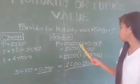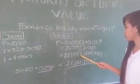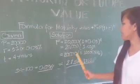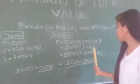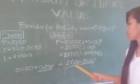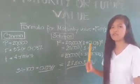Then we're going to multiply by itself. And then the answer is 1.12550881. Then we multiply 20,000 to 1.12 and so on. And the equivalent is equal to 22,510.17. And that's the maturity or the future value.